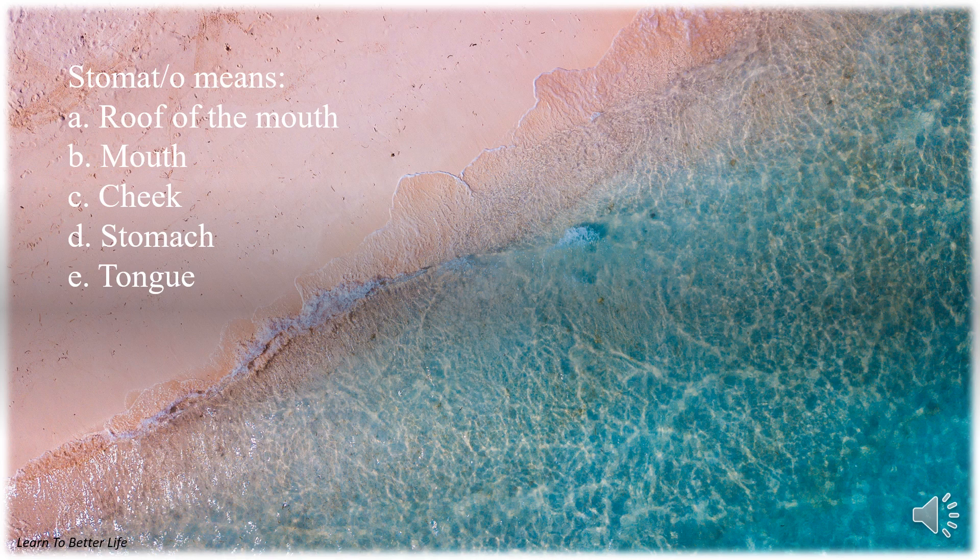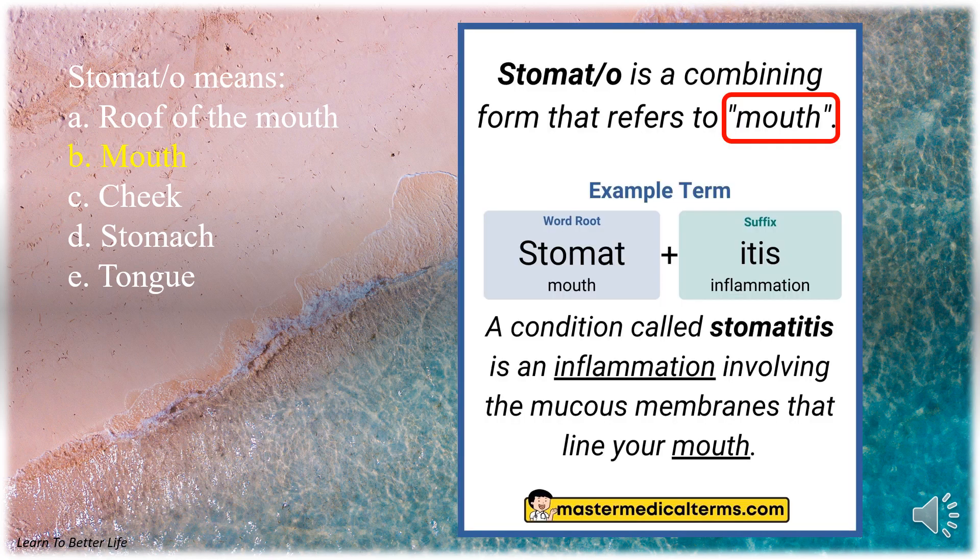Stomato means. A. Roof of the mouth. B. Mouth. C. Cheek. D. Stomach. E. Tongue. The answer is B. Mouth.